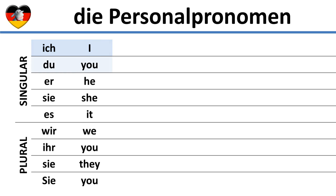The next pronoun is du. We use du to address a child or a person we know well, like a friend or family member. We wouldn't use du with a person that we would address using sir or madam.